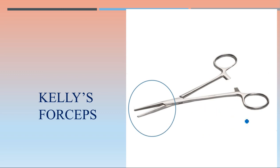Then Kelly's forceps — it looks like this, almost similar to a medium-sized artery forceps. Serrations are present, the fulcrum is here, and there is a presence of lock. Any instrument without a lock was Lister sinus forceps — this is Kelly's forceps and the lock is present.